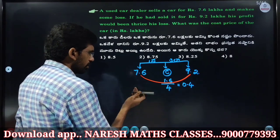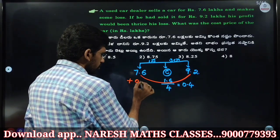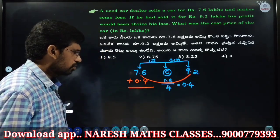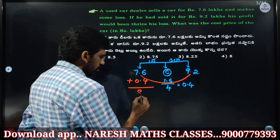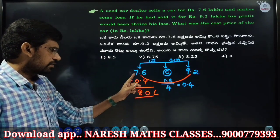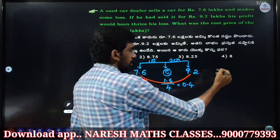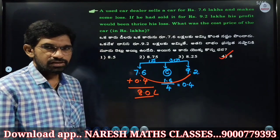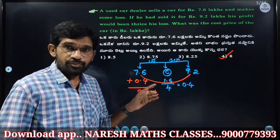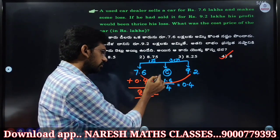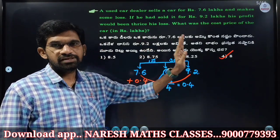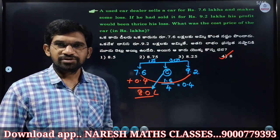Loss is 0.4 lacs. Put up 7.6 lacs plus 0.4 lacs. The cost price is 8 lacs. So cost price equals 7.6 plus 0.4 equals 8 lacs. The cost price length confirms this. What percentage is the cost price? The cost price is confirmed.